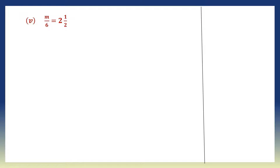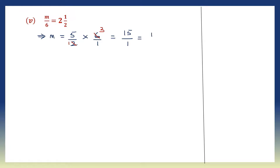Next question: m by 6 equals 2 and 1 by 2. Let's solve for m. m is equal to 2 1/2 into 6. Convert: 2 twos are 4 plus 1, giving 5 by 2, into 6 by 1. It becomes multiplication of fractions. Cancel: 2 ones are 2, 2 threes are 6. Multiply what's left: 5 threes are 15, and 1 ones are 1. So this becomes 15 by 1, which is simply 15. The value of m is 15.